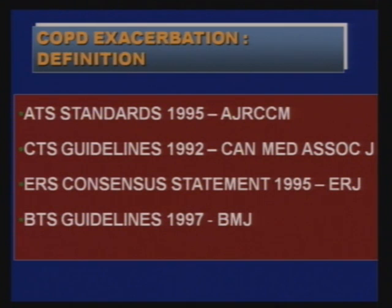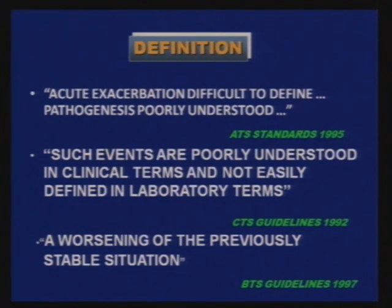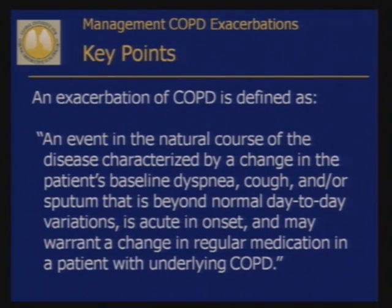How do we define exacerbation? Various definitions exist from the American Thoracic Society, Canadian Medical Association, European Respiratory Society, and British Thoracic Society. In 1995, the American society could not precisely define it because pathogenesis was poorly understood. The Canadian society noted these events are poorly understood clinically and not easily defined in laboratory terms. The British Thoracic Society defined it as a worsening of a previously stable situation in 1997. GOLD then incorporated all these definitions and studies.